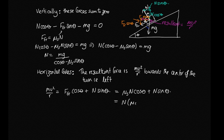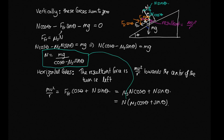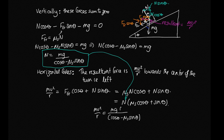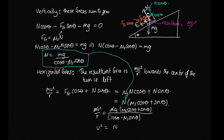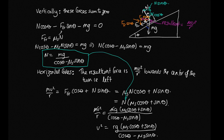Pulling N out as a common factor, we substitute the expression for normal force derived earlier. So mv²/r equals [mg / (cos(theta) - mu_s·sin(theta))] times (mu_s·cos(theta) + sin(theta)). Rearranging, v² = rg·(mu_s·cos(theta) + sin(theta)) / (cos(theta) - mu_s·sin(theta)), and so v equals the square root of this expression.